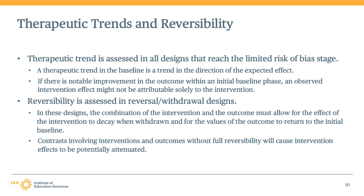Before describing how reviewers assess studies in this step, let's discuss some general definitions of therapeutic trend and reversibility. Therapeutic trend is a trend in the initial baseline phase in the direction of the expected effect of the intervention. For example, if an intervention is intended to reduce problem behavior and a student's problem behavior is declining in the initial baseline phase, that could be said to be a therapeutic trend. The WWC cares about therapeutic trends in single-case design studies because in the presence of large therapeutic trends, the observed effect of the intervention may be attenuated.